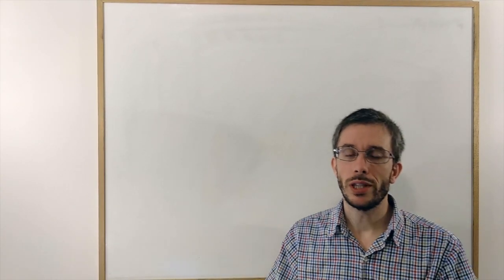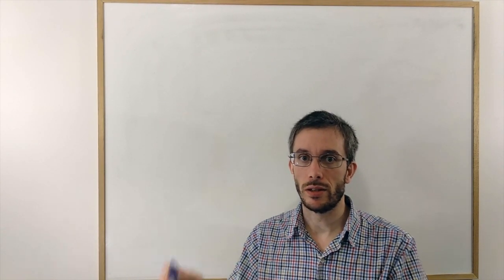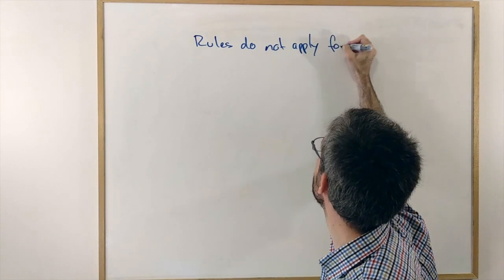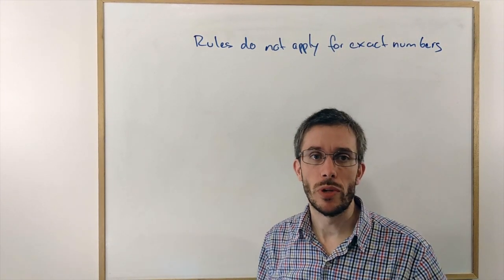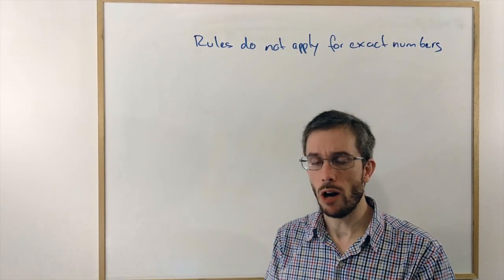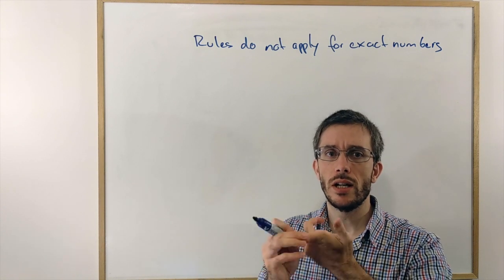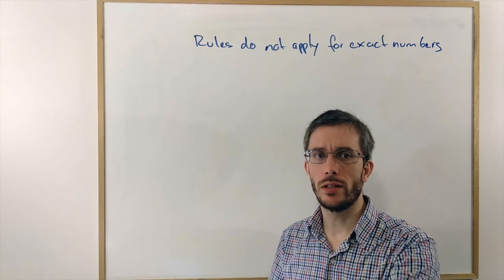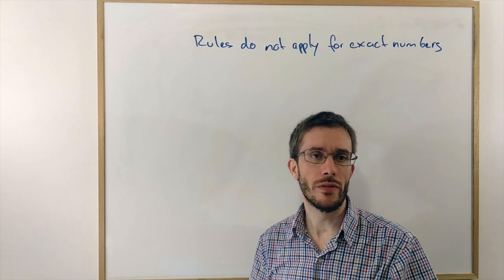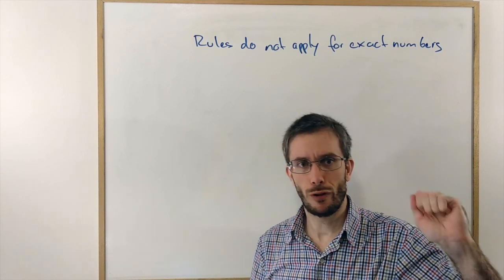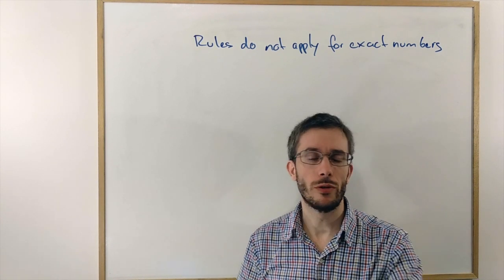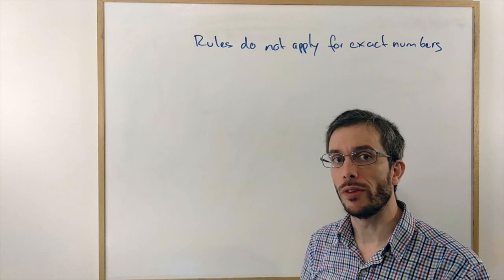These rules do not apply for exact numbers. What is an exact number? An exact number is something that is counted or something that is a definition. 1 foot is 12 inches would be a definition or I have 3 donuts. If I counted them, 1, 2, 3, the 3 would be a counted number.